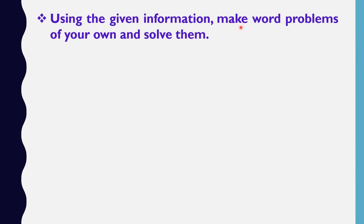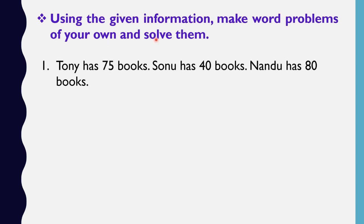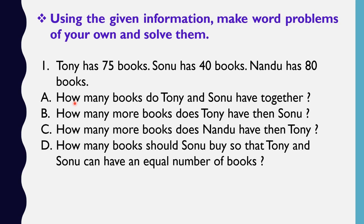Using the given information, make word problems of your own and solve them. The information given is: Tony has 75 books, Sonu has 40 books, Nandu has 80 books. Here I have made 4 word problems: (1) How many books do Tony and Sonu have together? (2) How many more books does Tony have than Sonu? (3) How many more books does Nandu have than Tony? (4) How many books should Sonu buy so that Tony and Sonu have an equal number of books? Let's solve them one by one.